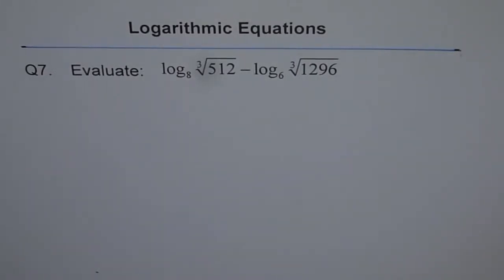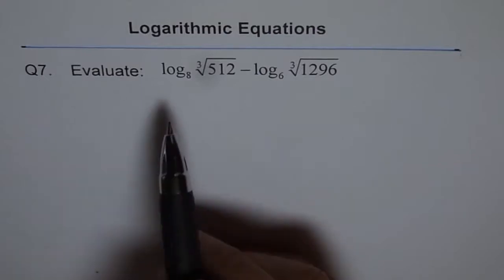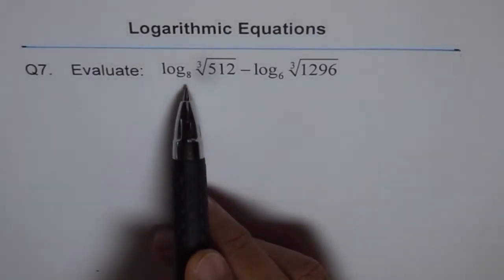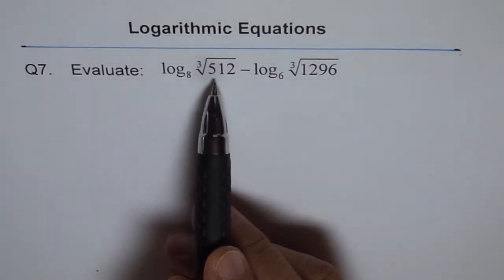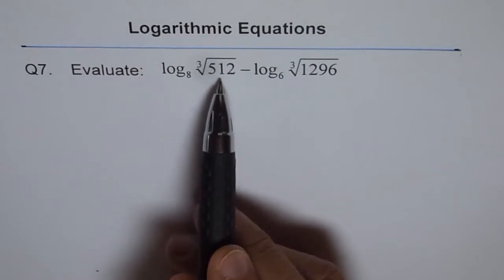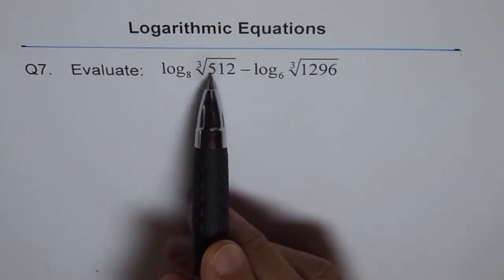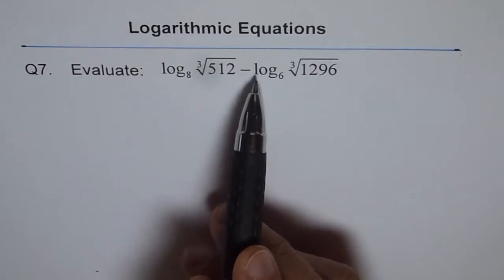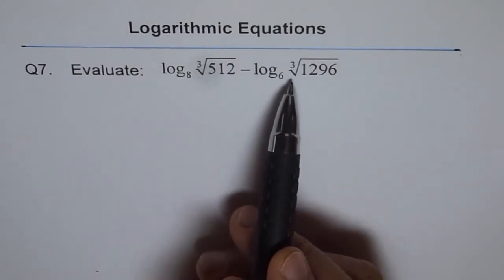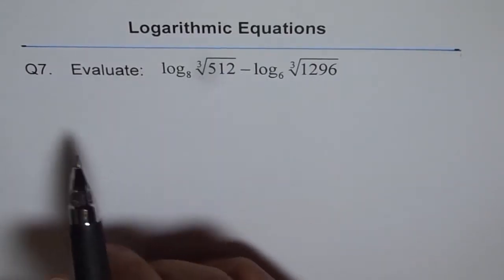Logarithmic equations, question 7: Evaluate log base 8 of cube root of 512 minus log base 6 of cube root of 1296.